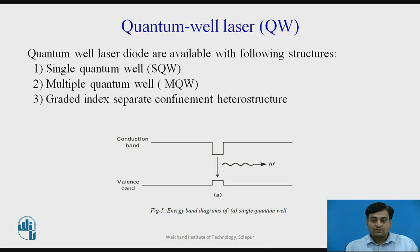Quantum well lasers are available in three structures. First structure is single quantum well. Second, multi quantum well. And third is graded index separate confinement heterostructures. Both single quantum well corresponding to a single active region and multi quantum well corresponding to multiple active layer regions are utilized.